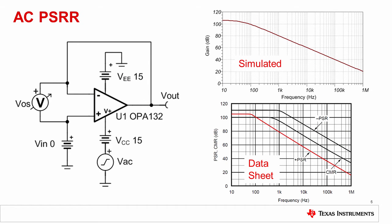This slide shows the configuration used to simulate AC power supply rejection. Strictly speaking, an inverse AC signal should be applied to both supplies, such that the instantaneous average supply voltage is 0. This would keep the common mode voltage constant, and no common mode rejection errors would be introduced. In fact, when performing an AC transfer characteristic for this configuration, the common mode errors are ignored by the simulator, whereas for a transient simulation, the common mode errors are included.